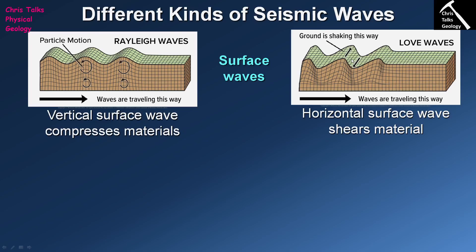When you feel an earthquake, you're detecting the passage of Rayleigh waves and Love waves across the surface of the Earth. Because they move across the surface, they are often the most damaging types of seismic waves, causing the ground to move. This ground movement can lead to building collapses, bridge collapses, people falling over and hurting themselves, gas lines breaking, and those kinds of problems.